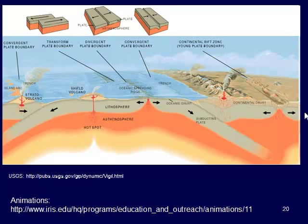Divergent plate boundaries can also occur on continental crust. As the plates get pulled apart, the asthenosphere below is under less pressure — this is called decompression melting. We end up with molten rock rising to the surface and creating volcanoes. Eventually, if that spreading continues, it will create new oceanic crust and an ocean basin that will grow bigger and bigger.